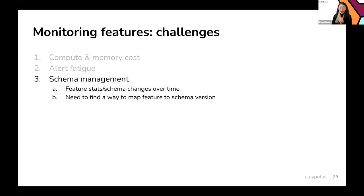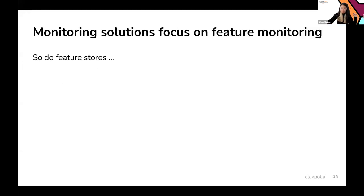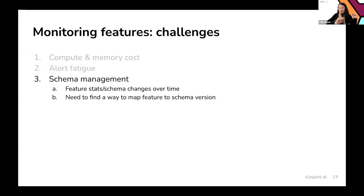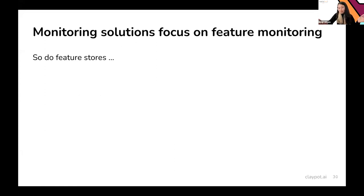Features usually follow an expected schema — for example, the median should be within range [A, B], where A and B are computed from training. This schema might change as you update the model and retrain on new data, so you need to track feature schemas over time. A lot of modern monitoring solutions focus on monitoring features, and feature stores are also adding monitoring functionality since they're already computing and persisting feature values — making it a natural place to do monitoring as well.